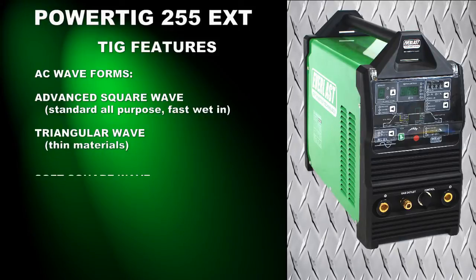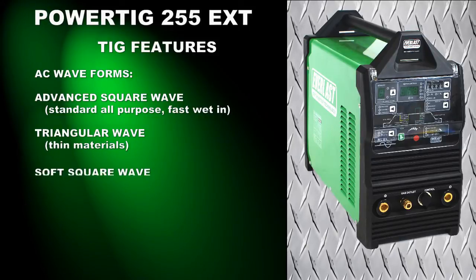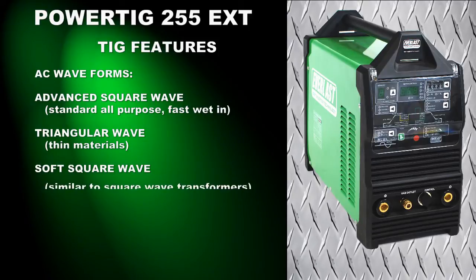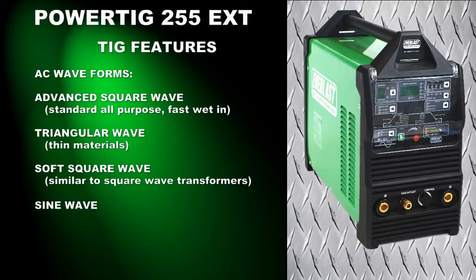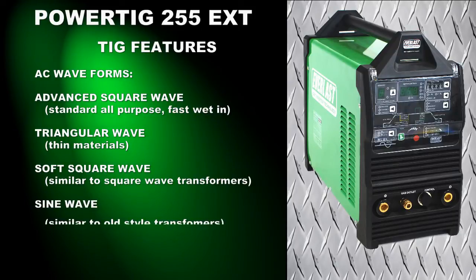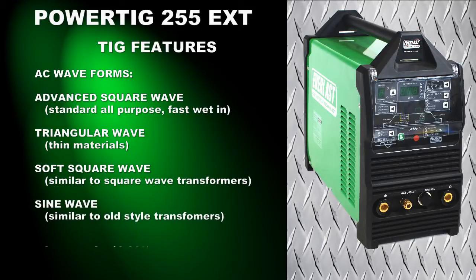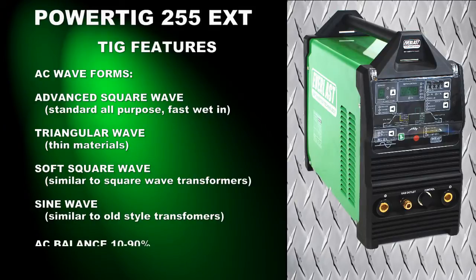The soft square wave is similar to a transformer welder square wave and offers a softer arc, but still retains controllability over a standard sine wave. The sine wave offers the softest feel and mimics the feel of older transformer welders. This is good for flat surface welding on thicker materials.